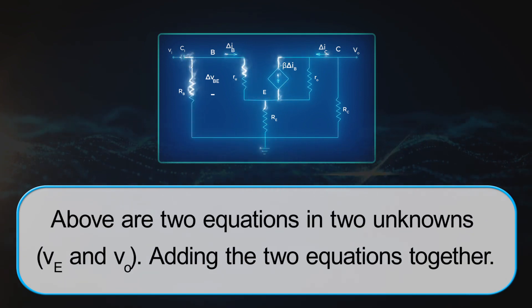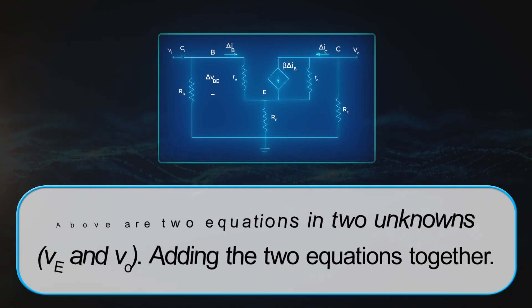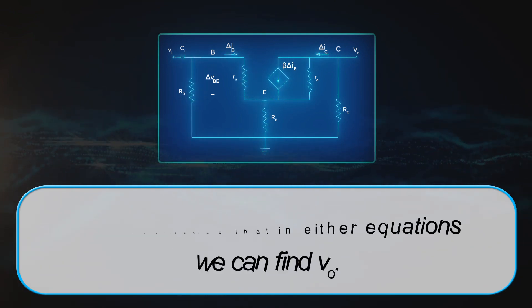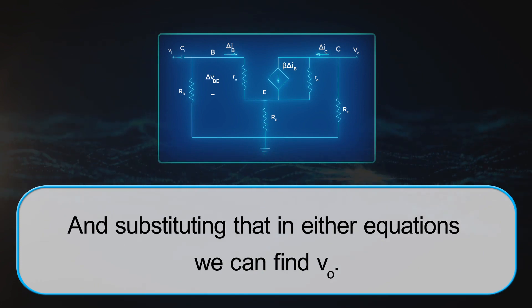Above are two equations in two unknowns, VE and VO. Adding the two equations together, VE equals to minus RE by RC into VO. And substituting that in either equations, we can find VO.